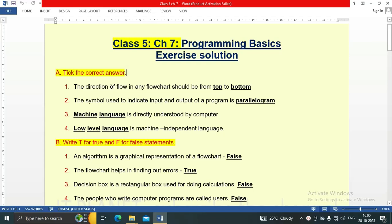Let's start. First question: tick the correct answer. The direction of flow in any flowchart should be from top to bottom. The symbol used to indicate input and output of a program is parallelogram. Machine language is directly understood by the computer, so the answer is machine language.